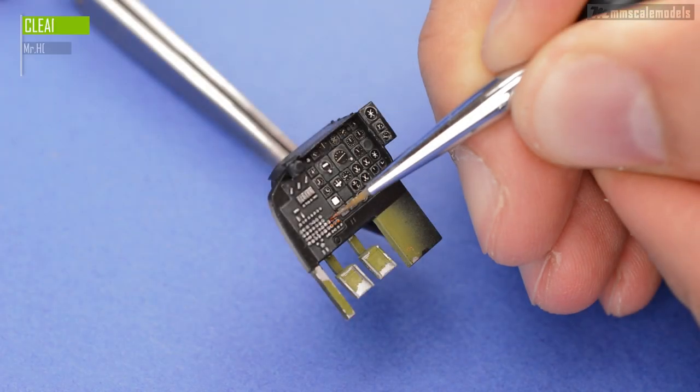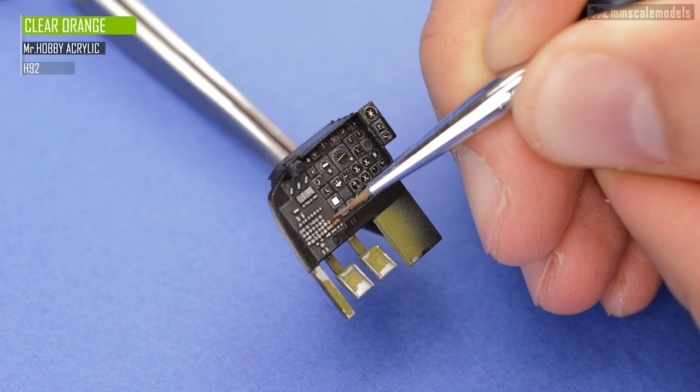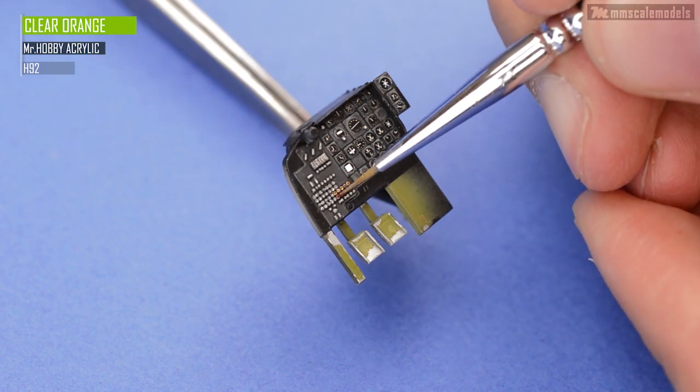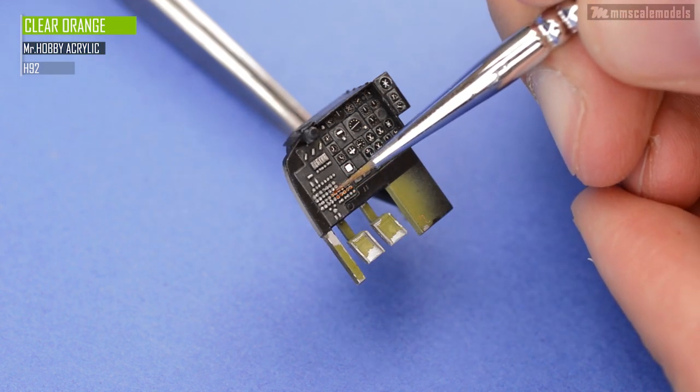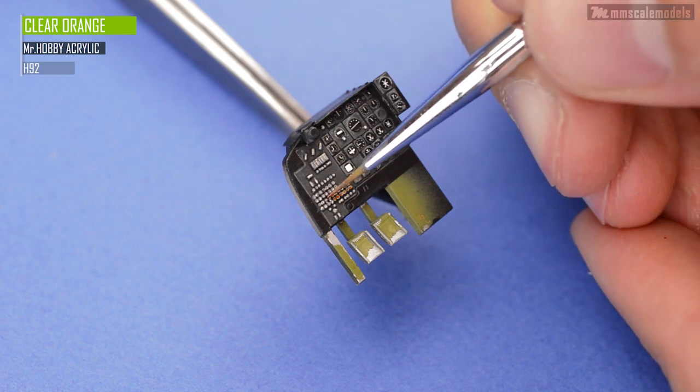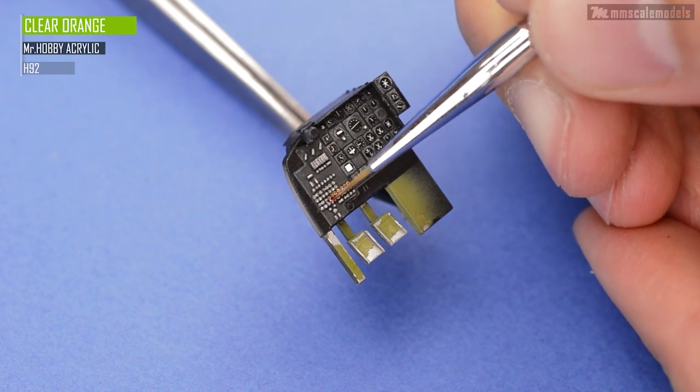Next I will put a tiny drop of transparent amber paint for each switch on 4 switch rows. I will put a link to my reference in the description so you can see what I am trying to replicate.